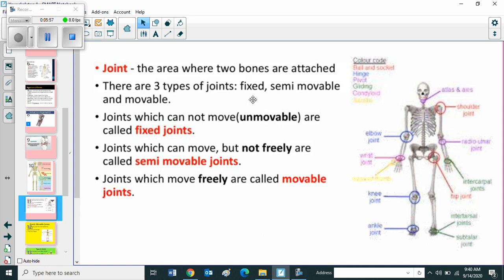There are three types of joints. Fixed, semi-movable and movable. Joints which cannot move, that means unmovable, are called fixed joints. Joints which can move but not freely are called semi-movable joints. Joints which move freely are called movable joints. So children there are three types of joint. Fixed joint means it is unmovable. We cannot move. The next one semi-movable means which can move but not freely. Last one is movable joints, that means which move freely.